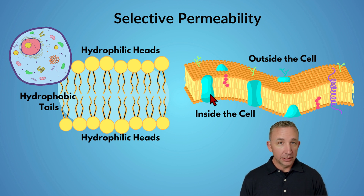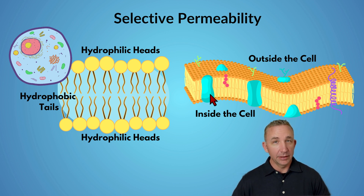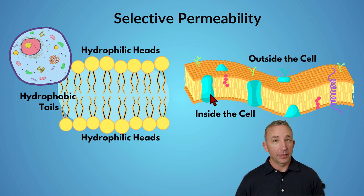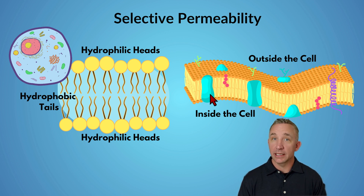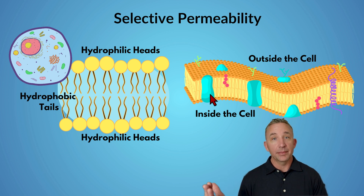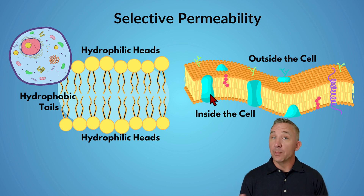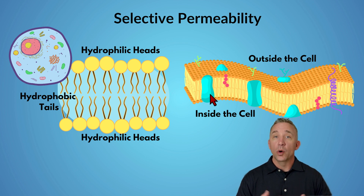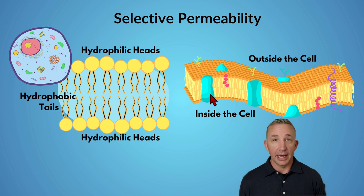Just understanding the basic content of selective permeability: we have trillions of cells, but that cell membrane, based on its structure and function — what it's trying to do to maintain homeostasis within the body — is allowing some things to come in and out based on the size and makeup, whether it's charged, uncharged, or the type of molecule that it actually is.